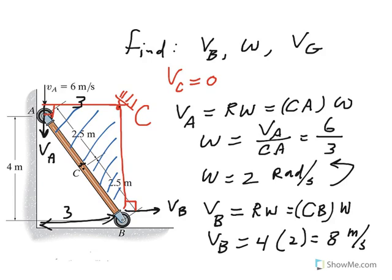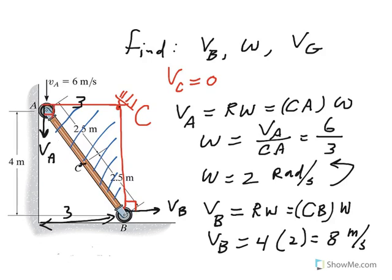So now that brings us to velocity of G. What is velocity of G right here in the center? So the way we do that, we connect from C to G to establish our radius.